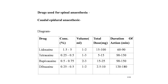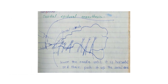Bupivacaine: concentration 0.5 to 0.75 percent, volume 2 to 3 ml, total dose 15 to 25 mg, duration of action 90 to 150 minutes. Dibucaine: concentration 0.25 to 0.5 percent, volume 1 to 2 ml, total dose 2.5 to 10 mg, duration of action 120 to 180 minutes.